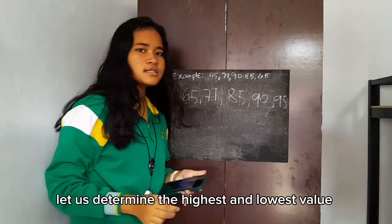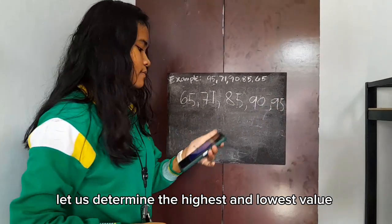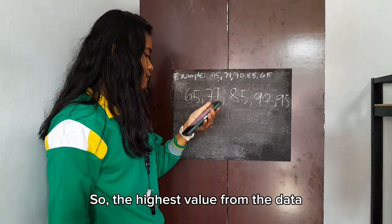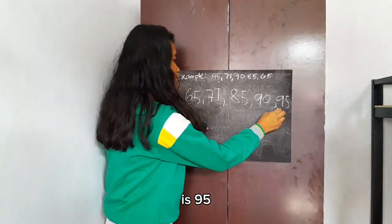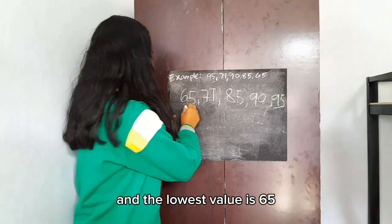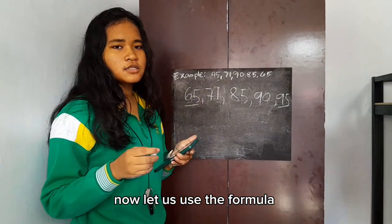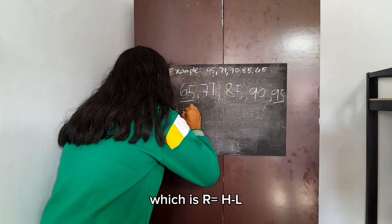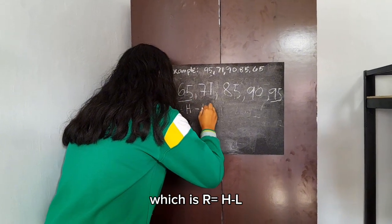Let us determine the highest and lowest value. So the highest value from the data is 95 and the lowest value is 65. Now let us use the formula which is R equals H minus L.